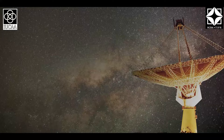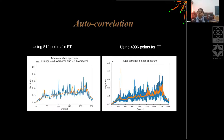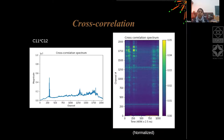Maitreyi is asking what is the difference between autocorrelation and cross-correlation. Autocorrelation is when you take the same signal and multiply it with a delayed copy of itself. Cross-correlation is when you multiply two different signals with a delay in one and find the product. Auto means with itself; cross means using two different signals and multiplying them with a delay.